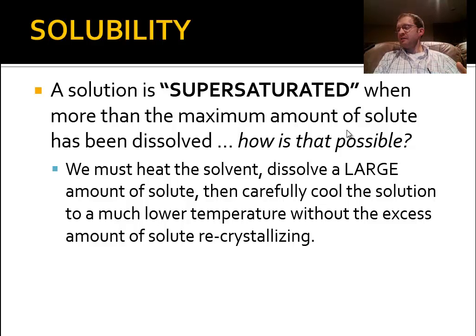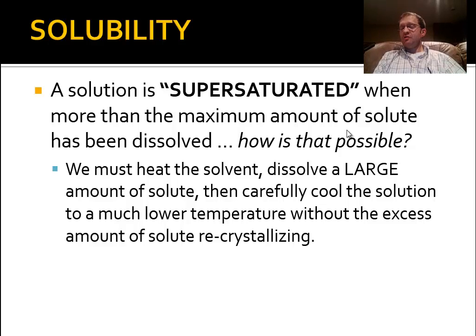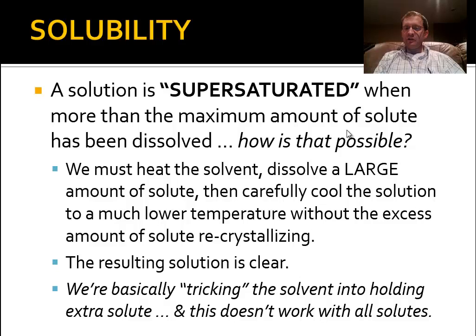This is how syrups are made. You heat the juice and sugar up, then cool it down and hope it doesn't crystallize out — because if it does, you get grainy syrup. When you successfully supersaturate, the solution will be clear. Note that you cannot do this with all solutes — you can't supersaturate sodium chloride, but sugar is quite easily supersaturated, which is the basis for many candies: Starburst, Jolly Rancher, Tootsie Roll, even candy canes.